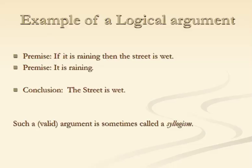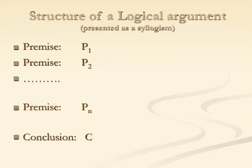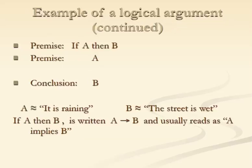If you imagine a situation where it's different, it's because you haven't understood the meaning of the sentences or propositions. The structure of a logical argument in the form of a syllogism is typically a list of premises — let's call them p1, p2 up to pn. From those premises, we have a conclusion.